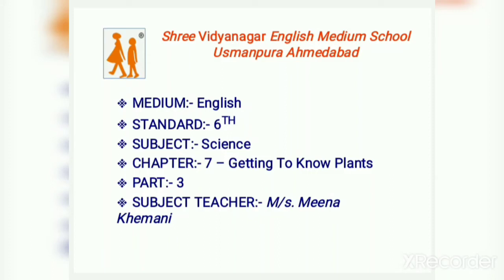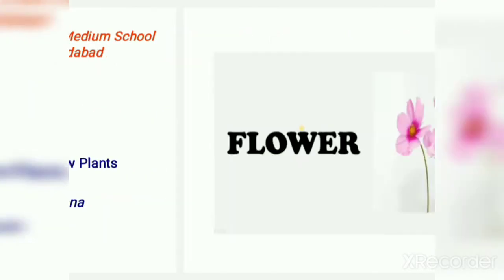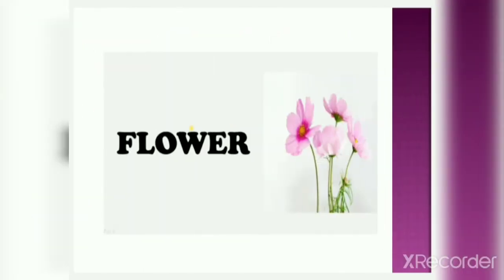Hi students, welcome back in chapter number 7 of science, Getting to Know Plants. This is the third and last part of the chapter. In the previous session, we had already studied about stems and leaves of the shoot system. The next part of the plant which we are going to study is flower, so let's study about the flower in detail.